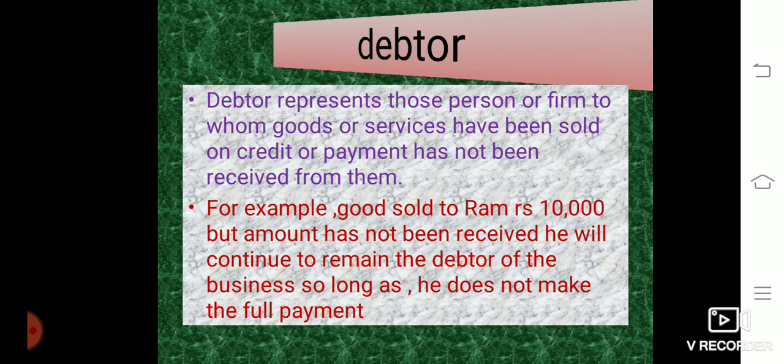The next accounting term is debtor. A debtor represents a person or firm to whom goods or services have been sold on credit and payment has not yet been received from them. For example, goods sold to Ram but the amount has not been received. Ram will continue to remain a debtor of the business so long as he does not make the full payment.